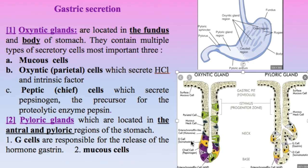These last two cells — the D cell and enterochromaffin-like cell — are also present in the pyloric gland. The pyloric gland contains the G cell, which is very important for the secretion of the gastric hormone gastrin, and also the mucus cell which secretes mucus.